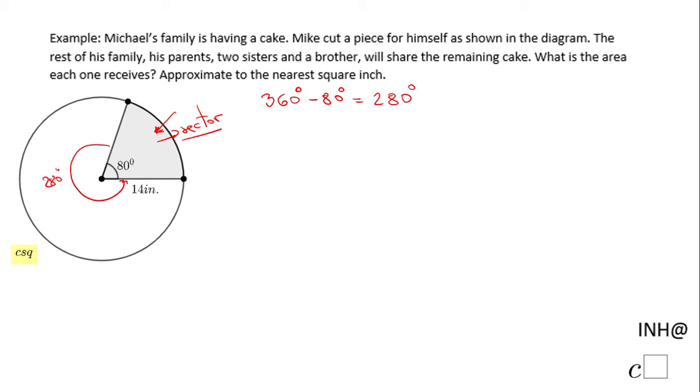There are five members in the family: his parents, two sisters, and a brother. So the other five are going to share this 280 degrees. I'm going to divide this by five.